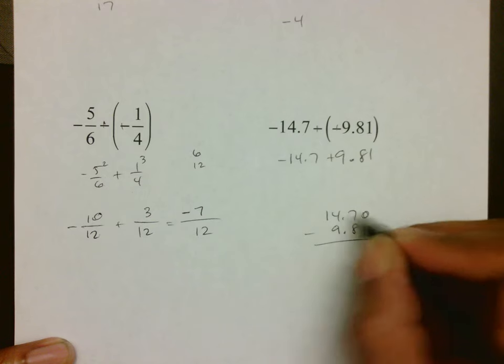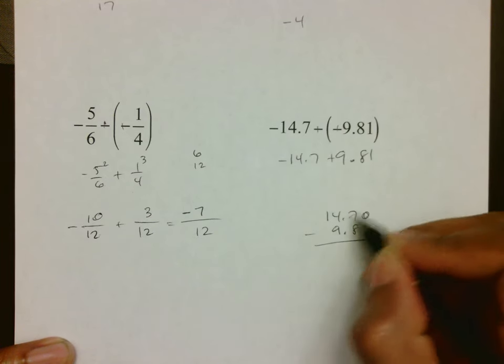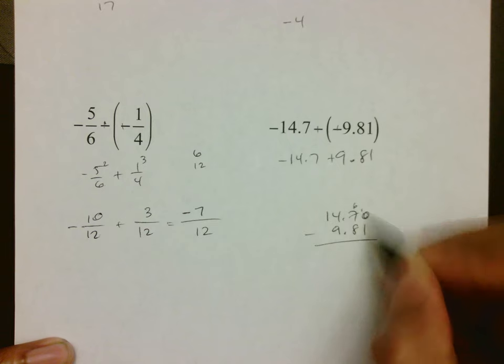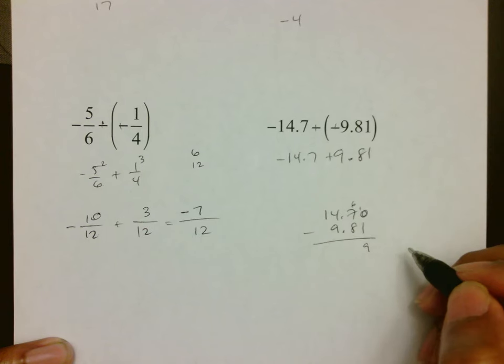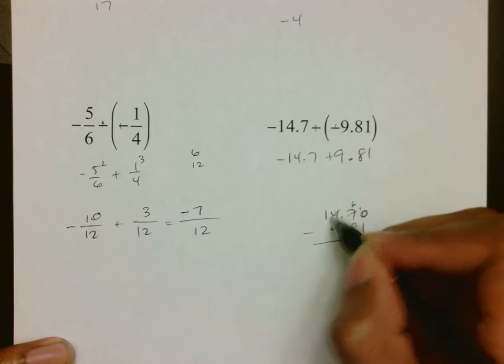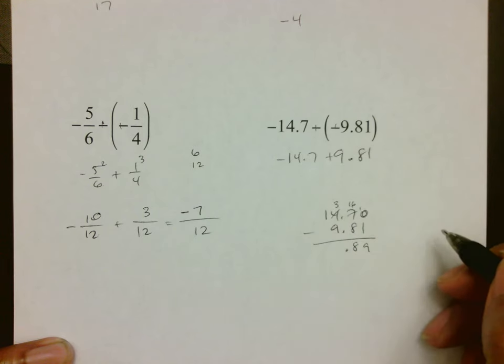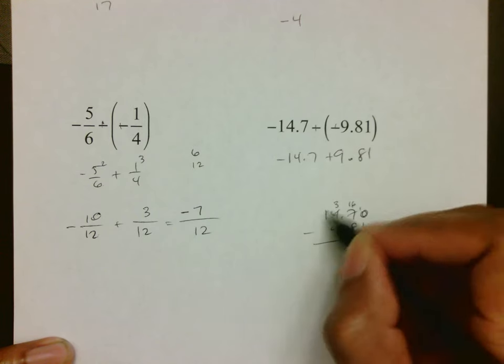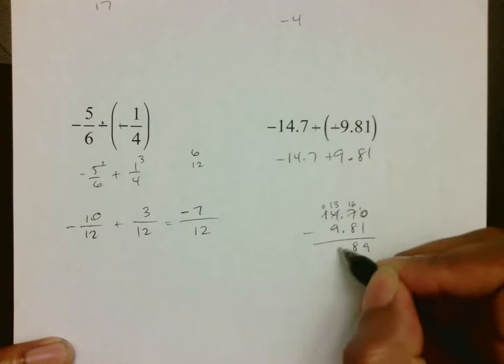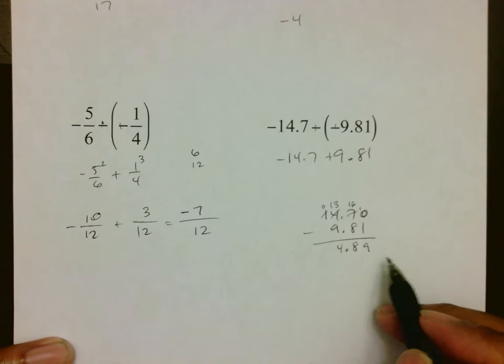Remember you want to balance out your decimals so everything is there. You cannot do 0 minus 1, so we turn this into a 6, turn that into a 10, and you're left with 9. Cannot do 6 minus 8, so we turn that into a 3, turn that into a 16. 16 minus 8 is 8. Cannot do 3 minus 9, so we turn that into a 0, that into a 13. Getting 4.89 is my number.